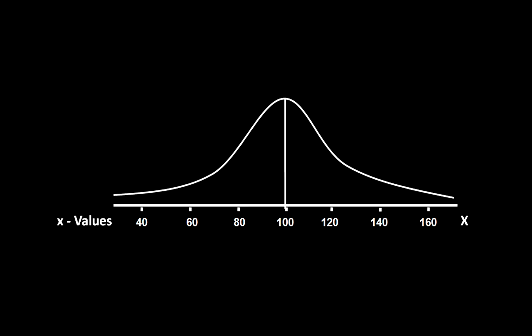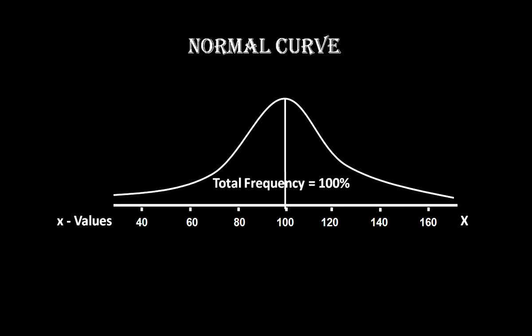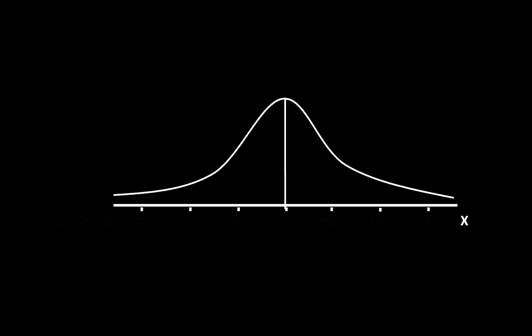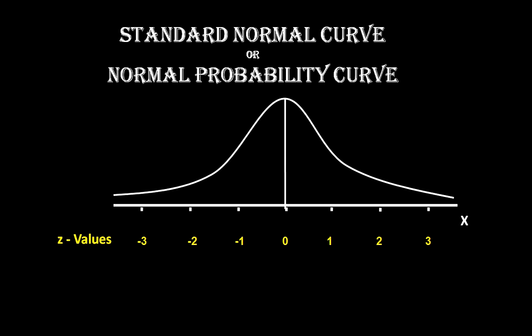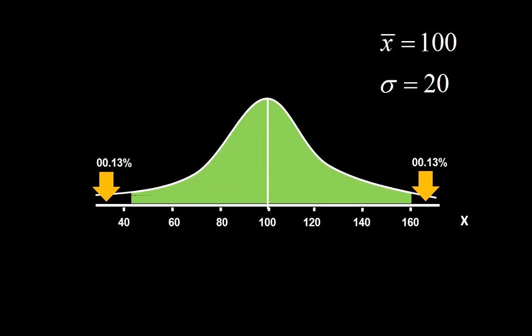When you read the curve with reference to X values, the curve is called a normal curve, and the area under the curve shows total frequency. When you read the curve with reference to Z values, the curve is called the standard normal curve. It is also called the normal probability curve because the area under the curve shows the total probability equal to 1. Remember the area, mean, and standard deviation relation of the normal curve.